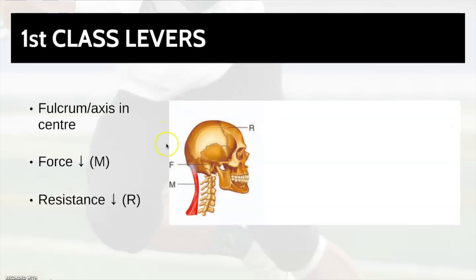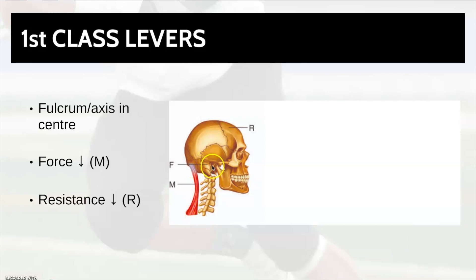Within the body it might look something like this. You've got the skull here, which is the resistance or the load — the thing that we need to move. In the middle, represented by F, is the fulcrum or the axis — that's where it pivots around, where the skull meets the spine. Then the muscle here represents the force. The muscle contracts, causes movement, pivoting around that point, and it causes the head to tilt backwards. This is an example of a first class lever within the body.